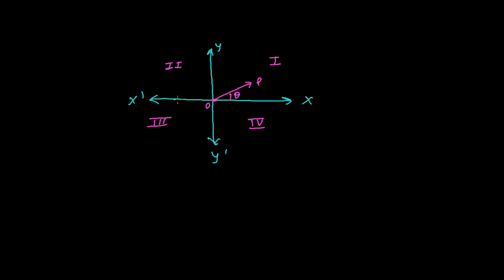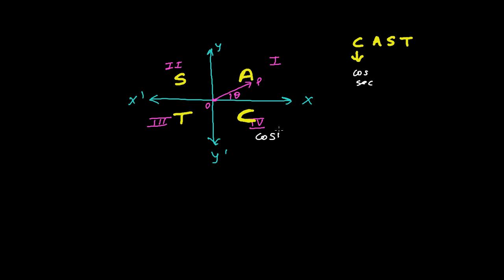So how are the signs of the trigonometric ratios? We have a very simple rule — always follow this rule. It's called CAST. C-A-S-T. Here C represents cosine, and the reciprocal of cosine which is secant — meaning in the fourth quadrant, cosine and secant are both positive, and all the rest of the values are negative.